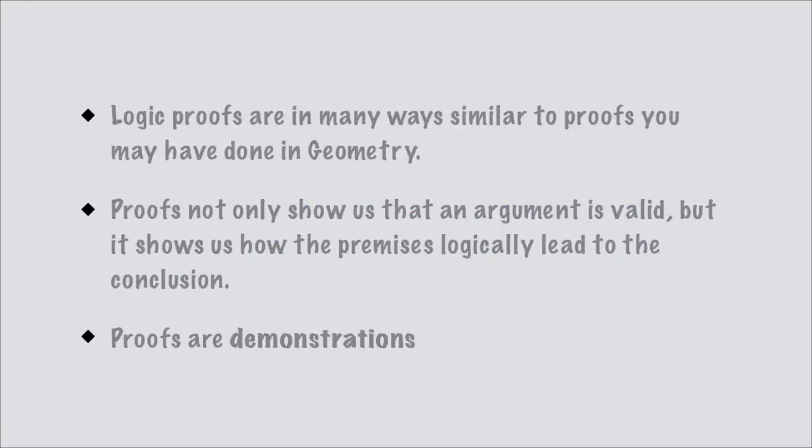Let's talk now about the proof process and what proofs are. Logic proofs are in many ways similar to what you may have done in geometry. In geometry, you were given axioms — what is a point, a line, a right angle — and then asked to prove some theorem using those axioms. The same sort of thing is going on when we're doing logic proofs: you're given some premises, given a conclusion, and asked using these rules — the eight basic inference rules — to demonstrate how you get from those premises to that conclusion.